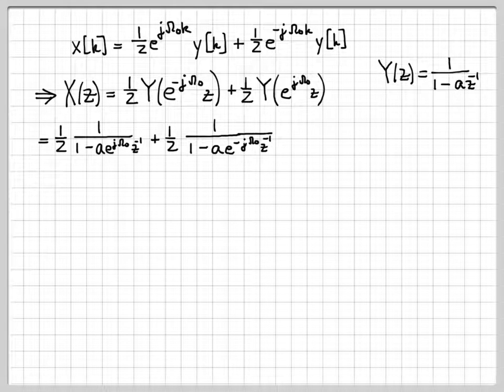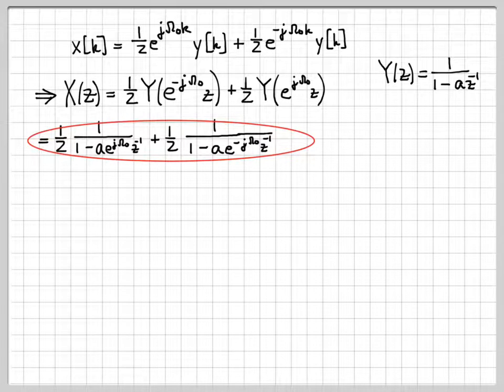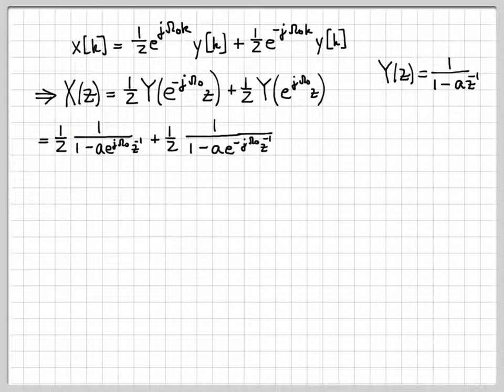We've used the multiplication by an exponential sequence property. Since we already knew what Y(z) is, we can substitute in the appropriate value for z.